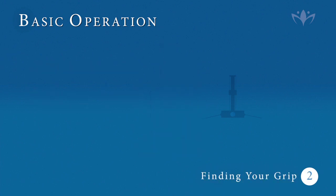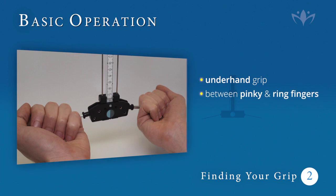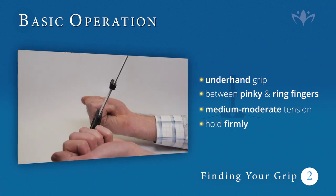2. Gripping your Lecher Instrument. Assume an underhand even grip, grasping the holding rods between your pinky and ring fingers with a medium to moderate amount of tension. You should be holding your Lecher firmly enough to prevent it from falling due to gravity, but not so tightly that it cannot move whatsoever.